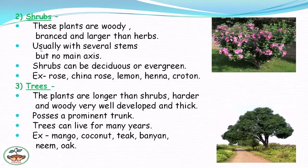The next group is shrubs. These plants are woody, branched, and larger than herbs, usually with several stems but no main axis. Shrubs can be deciduous or evergreen. Here we can hardly see the main axis but we can see the different branches that arise from the ground. This is an example of china rose. Examples of shrubs are rose, china rose, lemon, henna, and croton.